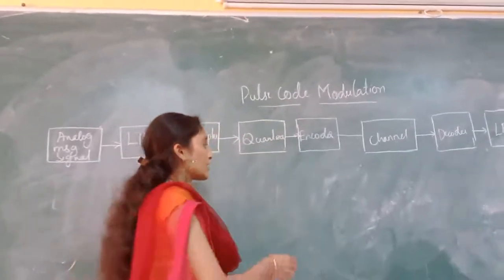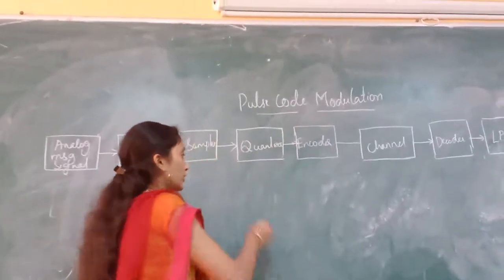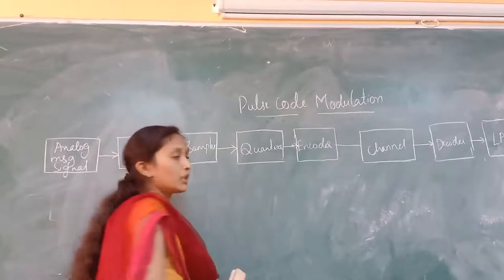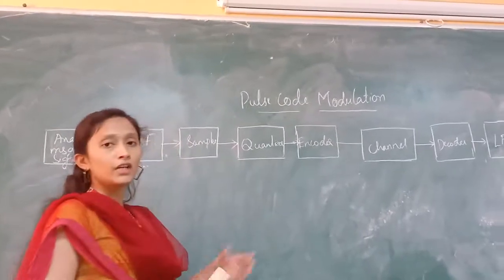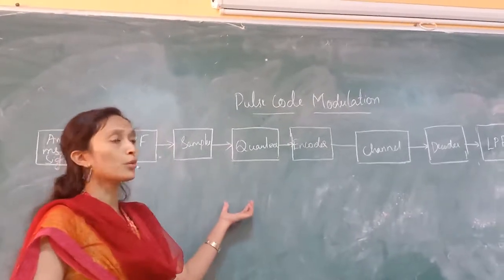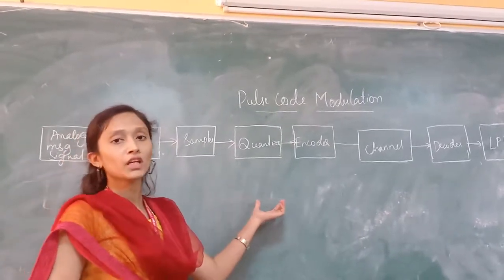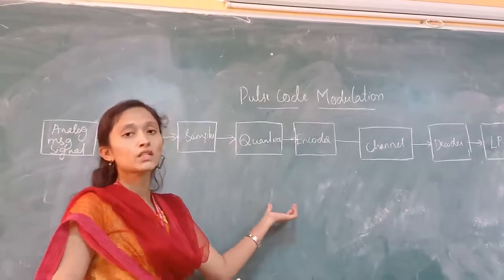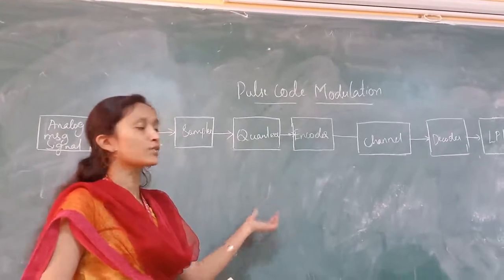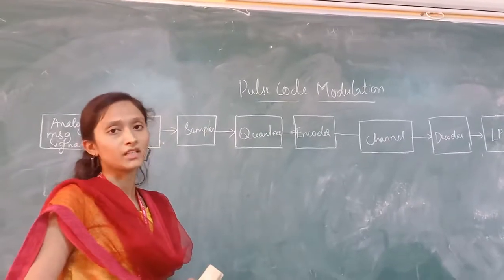First let us see what is modulation. Modulation is the process of varying one or more parameters of the carrier signal in accordance with the instantaneous value of the message signal.